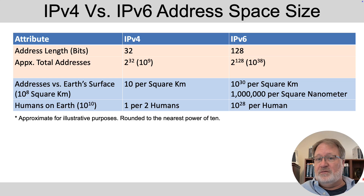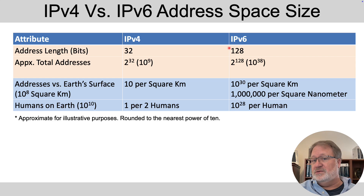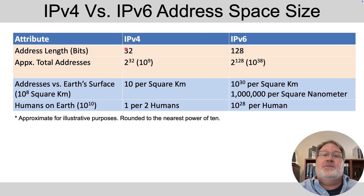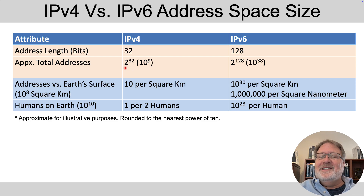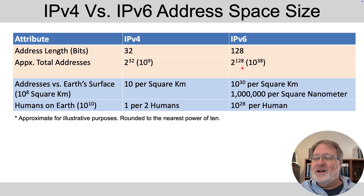IPv6 helps solve this IPv4 address exhaustion problem by using a huge address space. It uses a 128-bit long address — four times wider than a 32-bit IPv4 address. But as far as numbers of addresses, IPv4 gives a theoretical max of 2 to the 32nd addresses, which rounds to about 10 to the 9th. With IPv6, it's 2 to the 128th, which comes out to about 10 to the 38th — 10 to the 29th times as large.